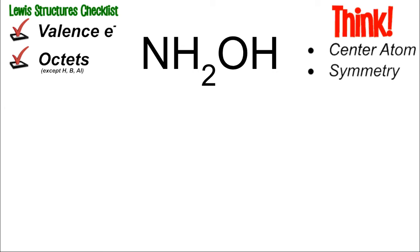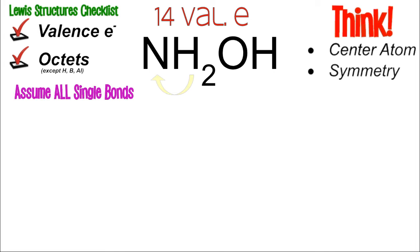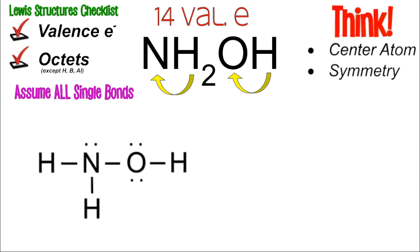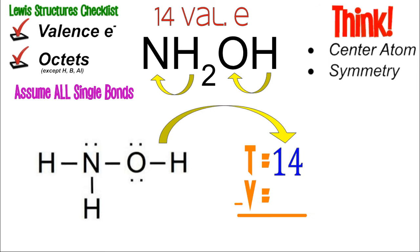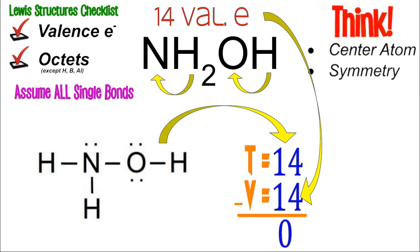A very similar problem: NH2OH. N is 5, H is 1, and O is 6, totaling 14 valence electrons. Place N in the middle with two H's on it, then bond O to N with an H on the O. Adding those all up gives 14 electrons from the drawing, and we're supposed to have 14. The TV difference is zero, so no extra bonds are needed. This is the proper structure with all single bonds.